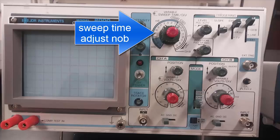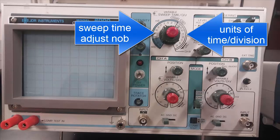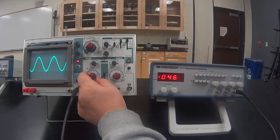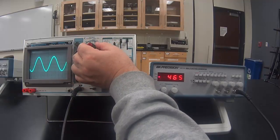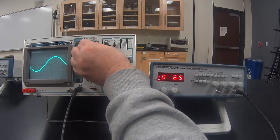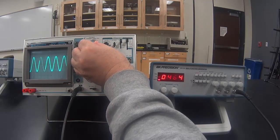This knob is the sweep time adjust knob. It's marked off in units of time per division. Adjusting the knob to a higher setting gives you more displayed cycles and adjusting to a lower gives you fewer.